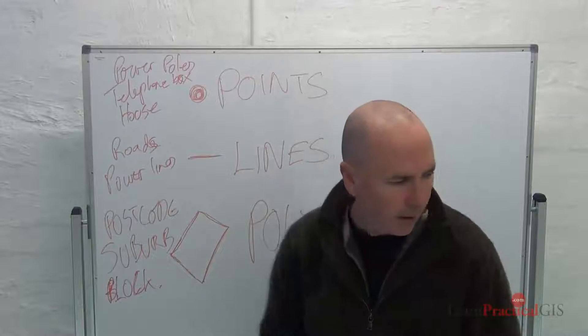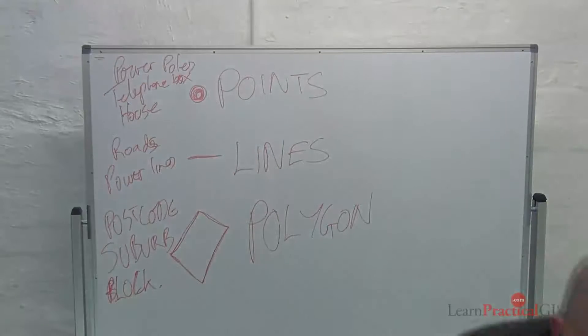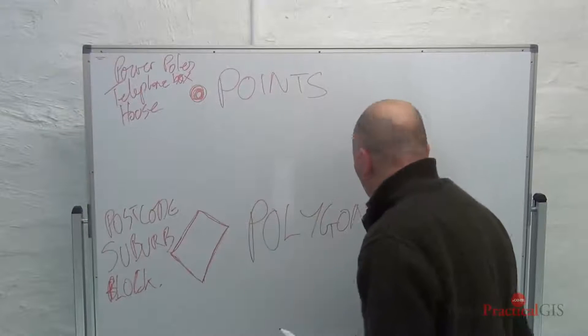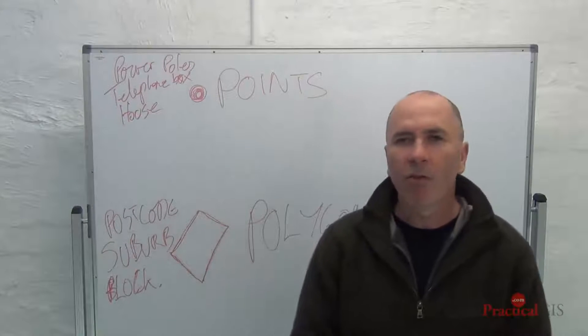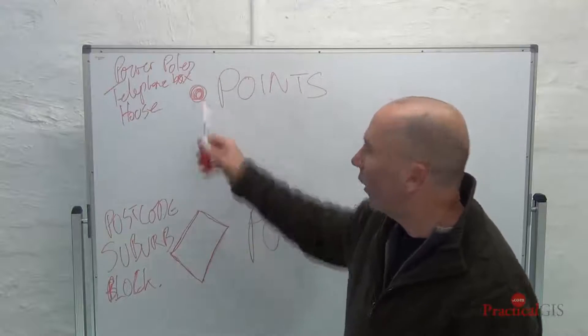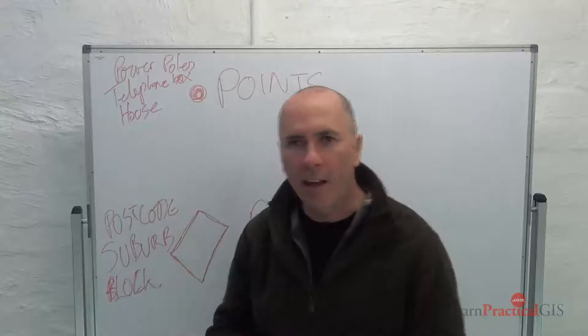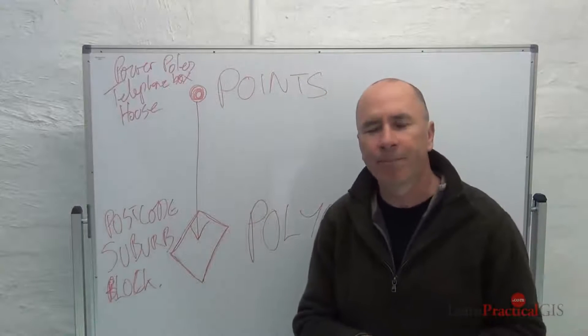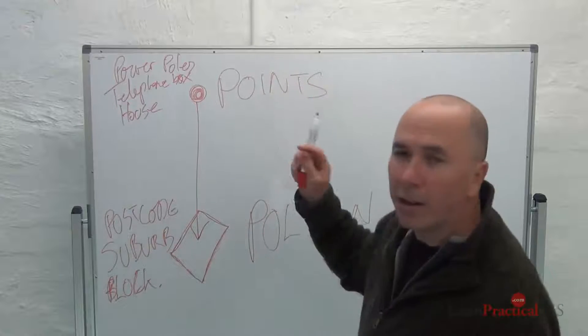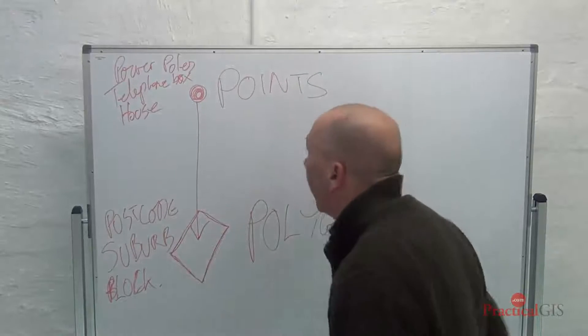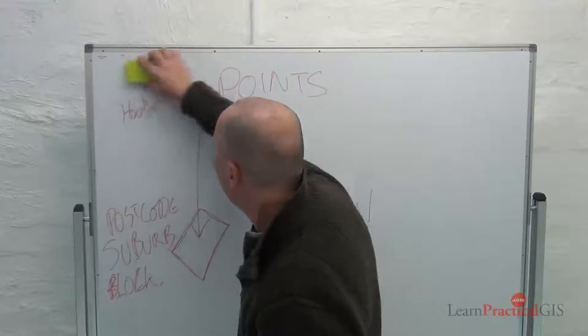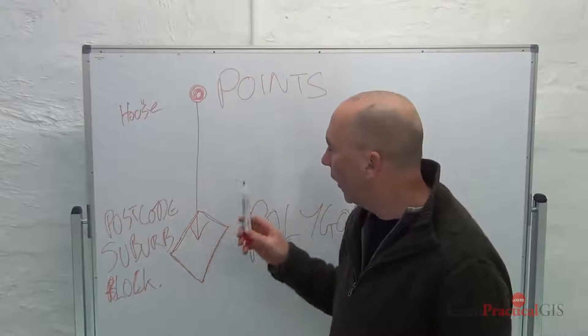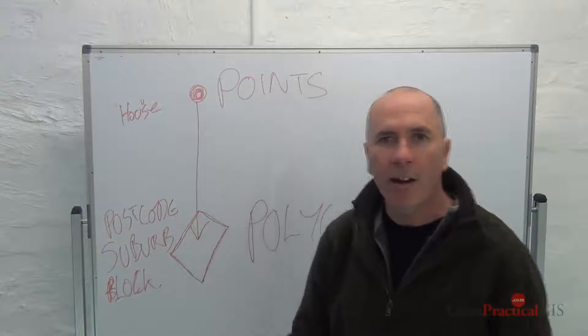Now, I'm going to cross out, if I could find my rubber, which is here. I'm going to cross out this line because I'm not really wanting to deal with that today. So, the really interesting thing about these two constructs in terms of housing analysis is that a point can sit inside a polygon. Big deal. Well, it is a very big deal because a house can sit inside a postcode, it can sit inside the suburb, and it can sit inside a block of land.